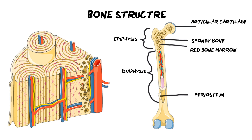The periosteum is there for protection. It protects our bones, and it also makes your bones wet — it gives your bones moisture because they can't be dry. Then if we go into the next layer just below that, you can see this thicker part of bone, and that is our compact bone.